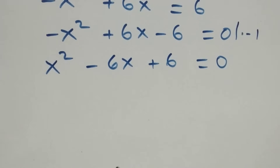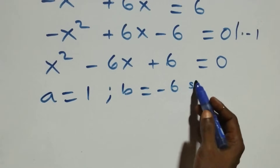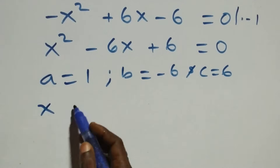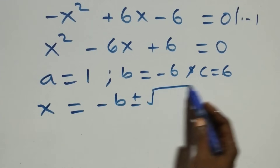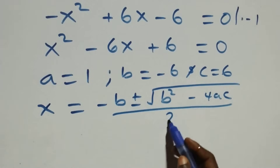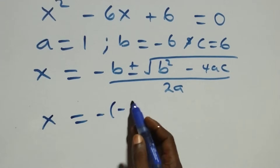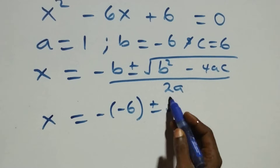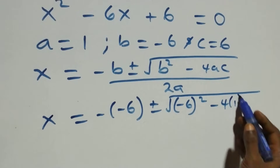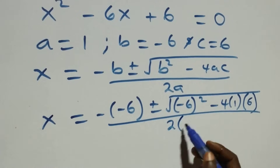We now have a quadratic equation where a equals 1, b equals minus 6, and c equals 6. Applying the quadratic formula, x equals minus b plus or minus square root of (b squared minus 4ac), all over 2a. Substituting, x equals minus(minus 6) plus or minus square root of (minus 6 squared minus 4 times 1 times 6), over 2 times 1.